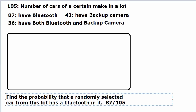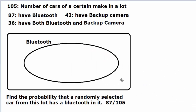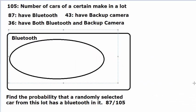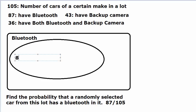Or in other words, if we have this - say this is the entire lot with 105 cars, out of which 87 have Bluetooth in them - so 87 over 105 total is the probability that a randomly selected car has Bluetooth in it.